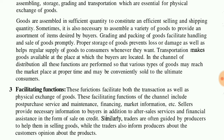Traders are often guided by producers to help them in selling goods. The producer's role is very important — the producer guides the traders to sell goods. While traders also inform producers about the customer's opinion about the product, so the company can improve the product according to consumer demand. The customer is king, and these information flows fall under facilitating functions.